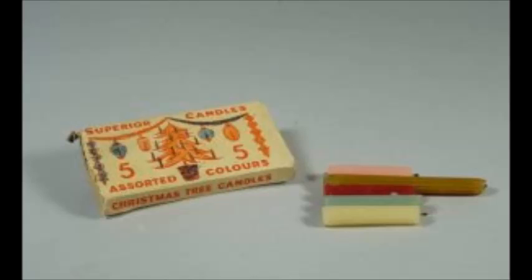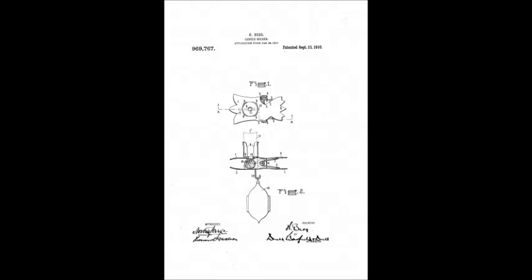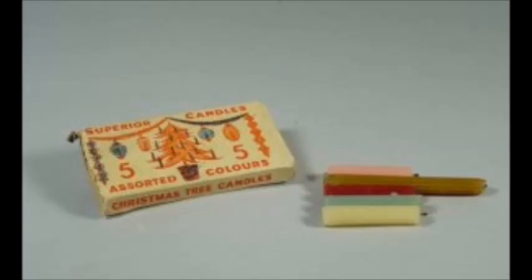Prior to the invention of electricity, candles were placed on the tree. Decorating trees with candles also started in Europe and spread to North America in the 1800s. Candles were placed in candle clip holders that would clip onto the tree. This patent shows an early Christmas tree candle clip holder with a wax catcher. Having an open flame by a tree comes with its own inherent problems, so a bucket of water would often be kept close to the tree in case any flames had to be doused. These tree candles are part of the Oshawa Museum's collection, and they are small and would have been placed in a holder that resembles this patent.